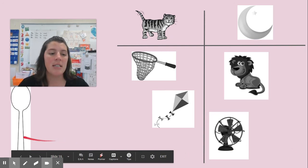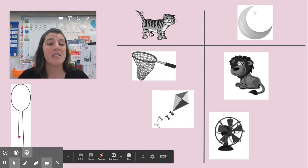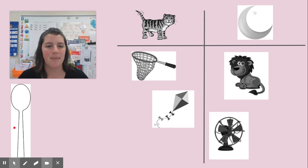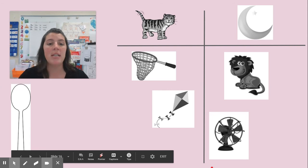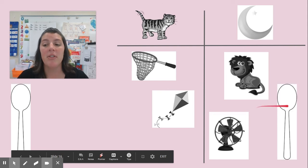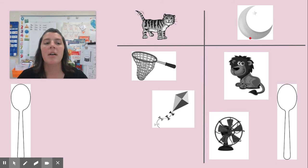All right, here is my next picture. What is that? Sorry, it's kind of hidden, isn't it? That's right, it's a spoon. What sound do you hear at the end? Would this picture go under cat, or would this picture go under moon? Take your finger and point to where I should put it. I put the spoon under the picture of a moon, because it has the same ending sound.